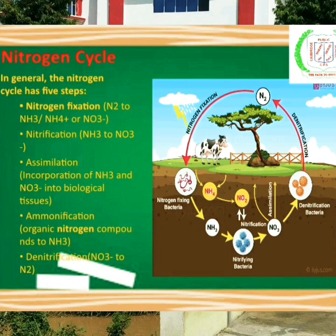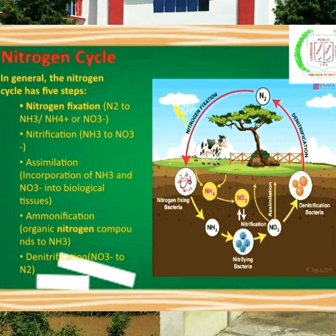Nitrogen Cycle. In general, the nitrogen cycle has five steps: nitrogen fixation, nitrification, assimilation, ammonification, and denitrification. Is nitrogen cycle ke dwara nitrogen fixation ka process hota hai, jismein environment se nitrogen ko lekar nitrate mein convert kiya jaata hai, jo ki sirf dalahni paudhe ke dwara hota hai.